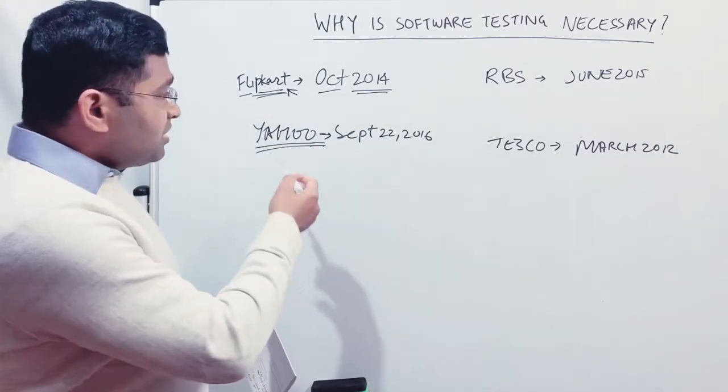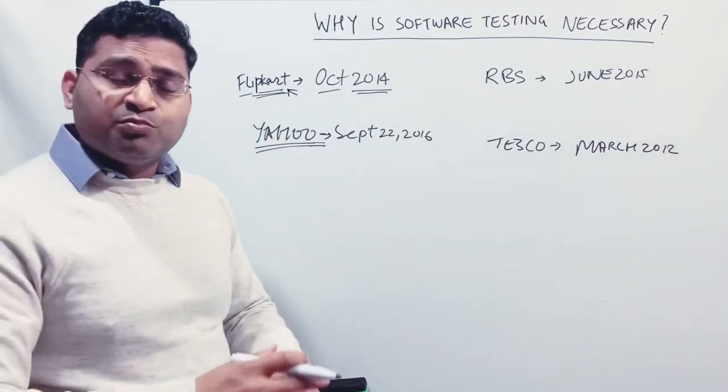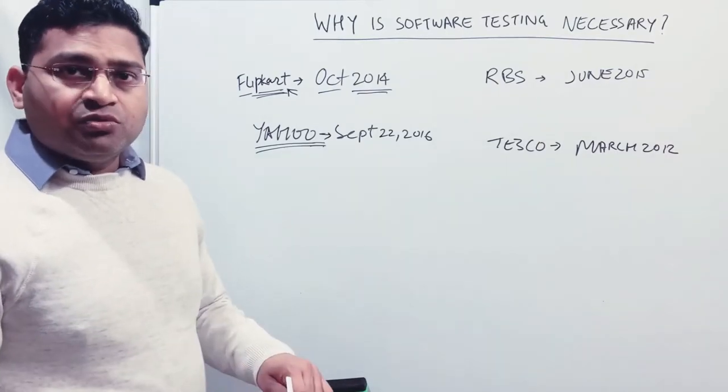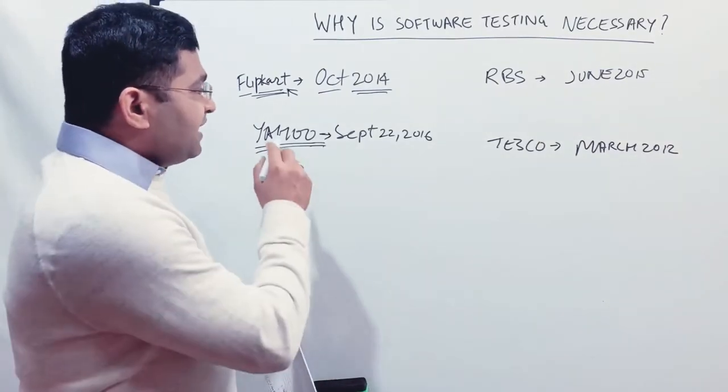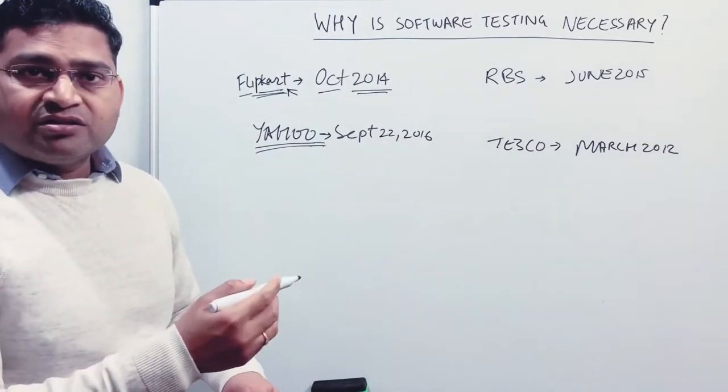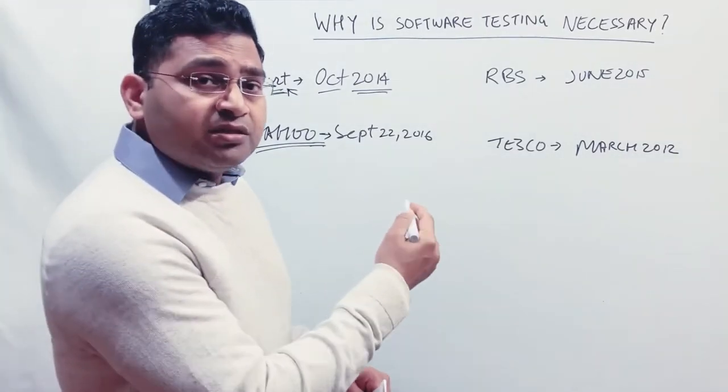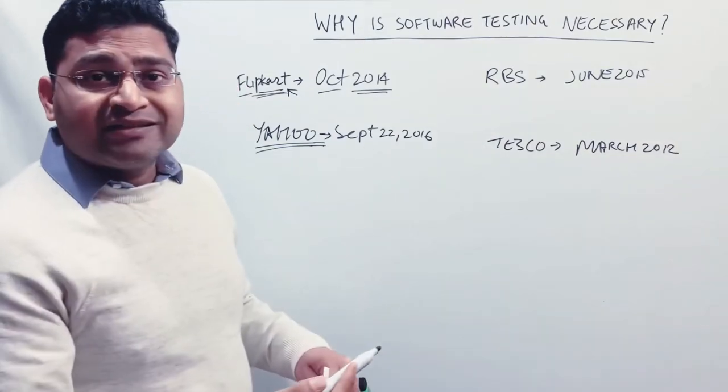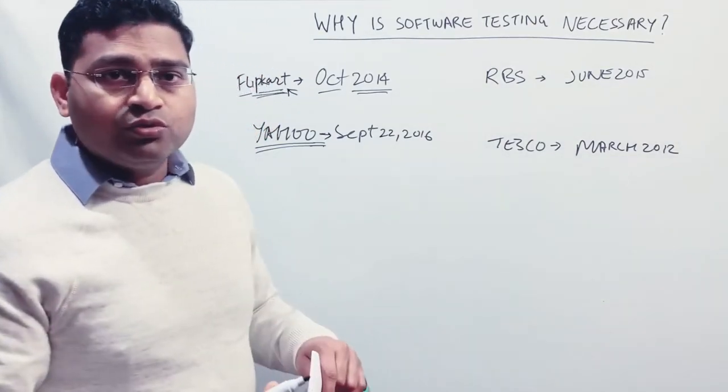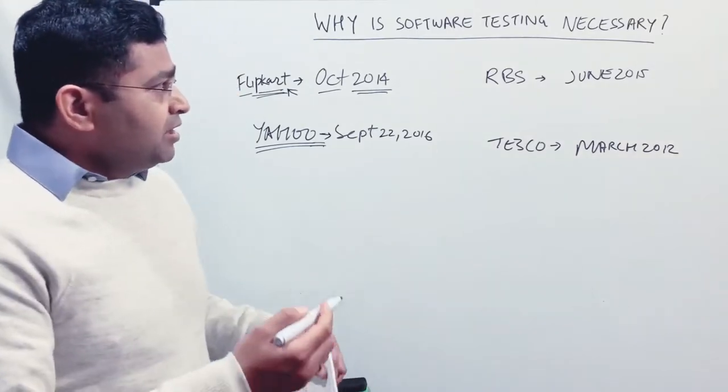Now you can imagine these are big organizations with big teams, big software testing practices, how much testing they do. Even though they had such big failures in the softwares that they have. Now I'm just explaining this to give you the impact that a particular defect or issue in production can have.